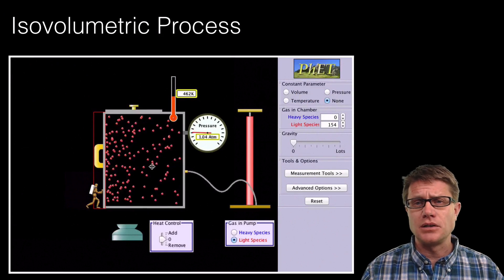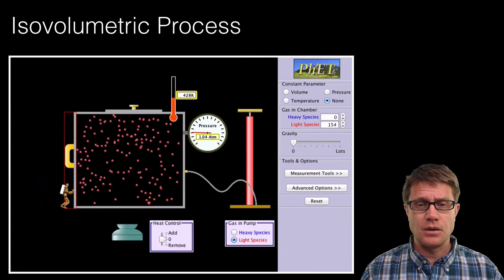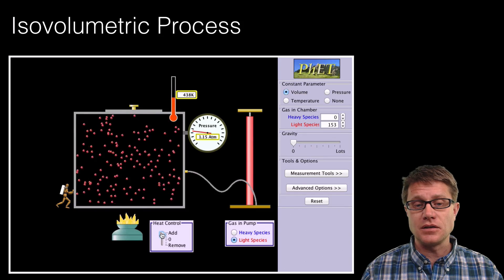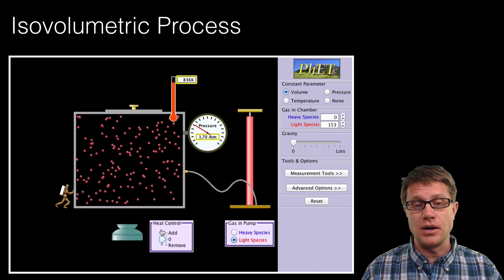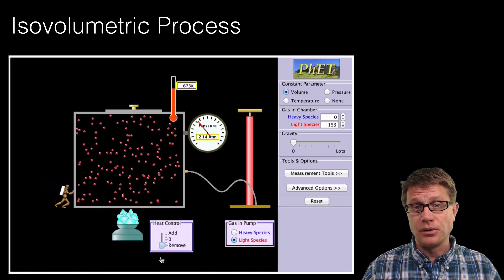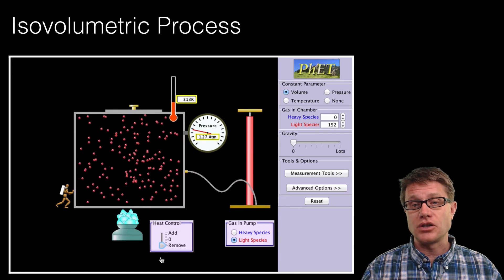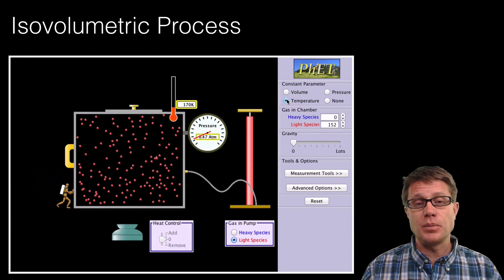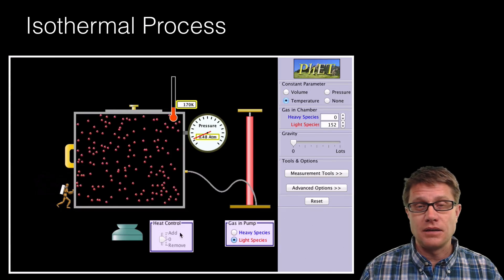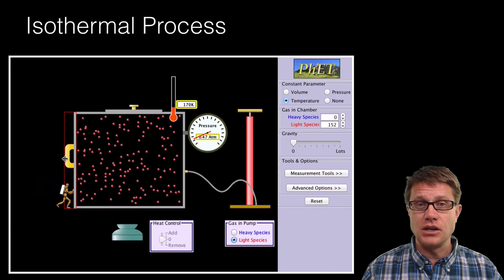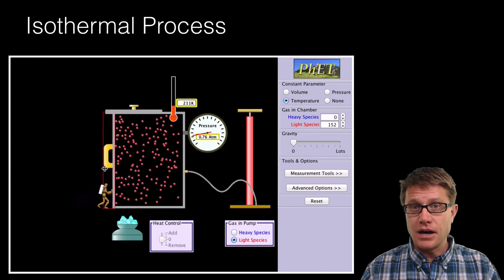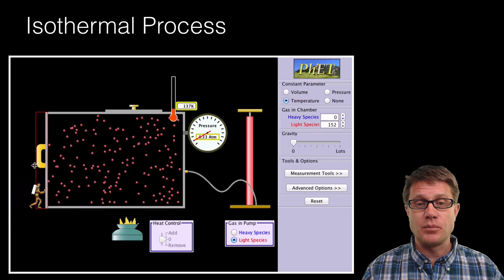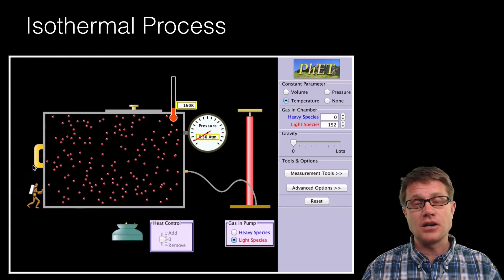Let us model these using the PHET simulation. With the volume locked constant — isovolumetric — we add heat and increase temperature, so pressure goes up. If we add ice at the bottom, heat flows from the system to the surroundings and pressure decreases, while volume stays the same the entire time. For the isothermal case, we keep temperature constant so the heat controls are disabled — energy must enter or leave through work. Applying a force from outside increases the pressure inside; doing negative work from outside drops the pressure, giving that nice curve on the PV diagram.